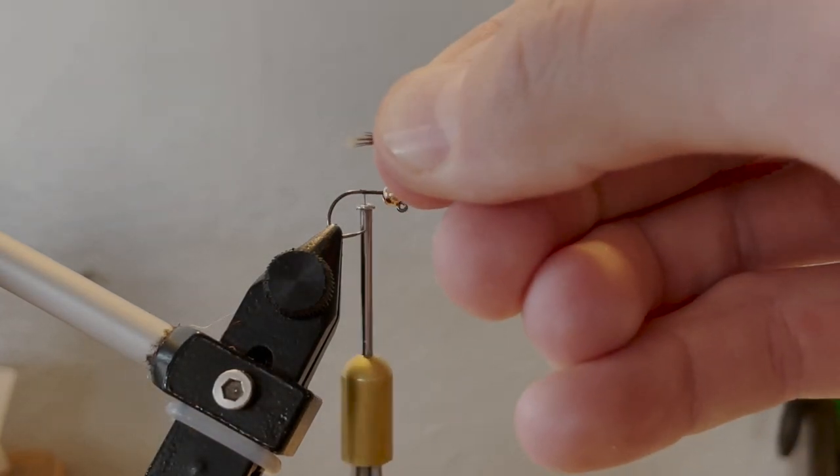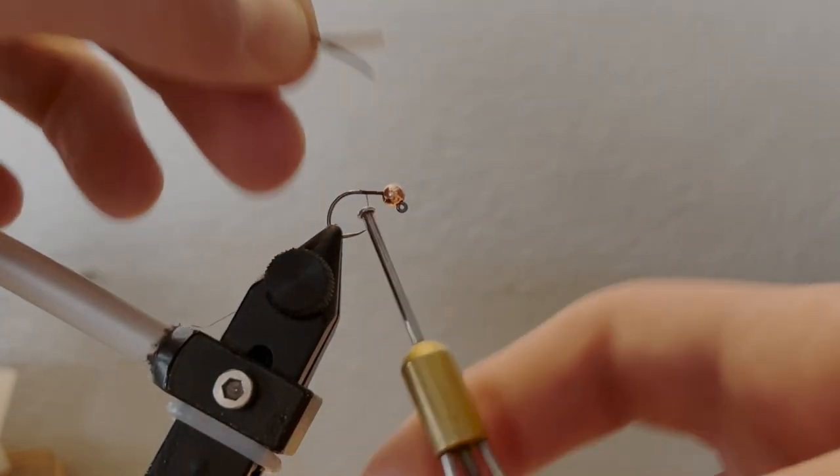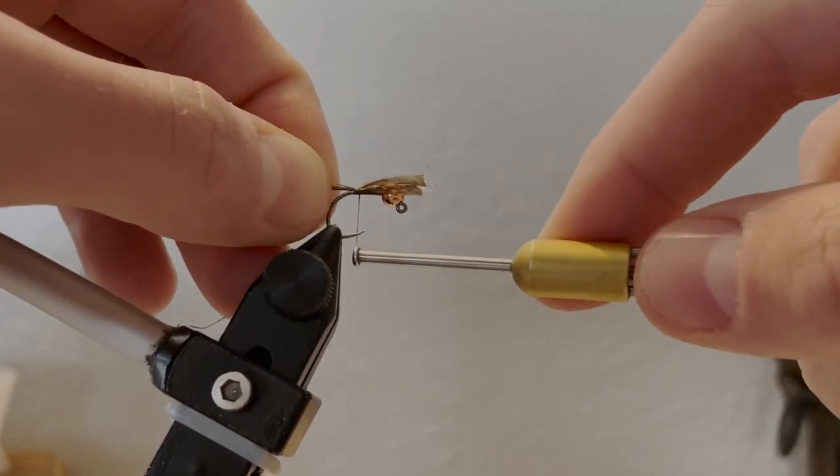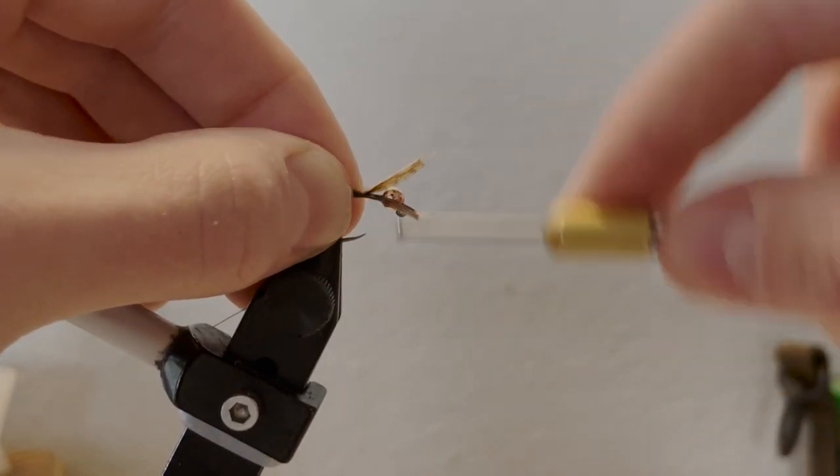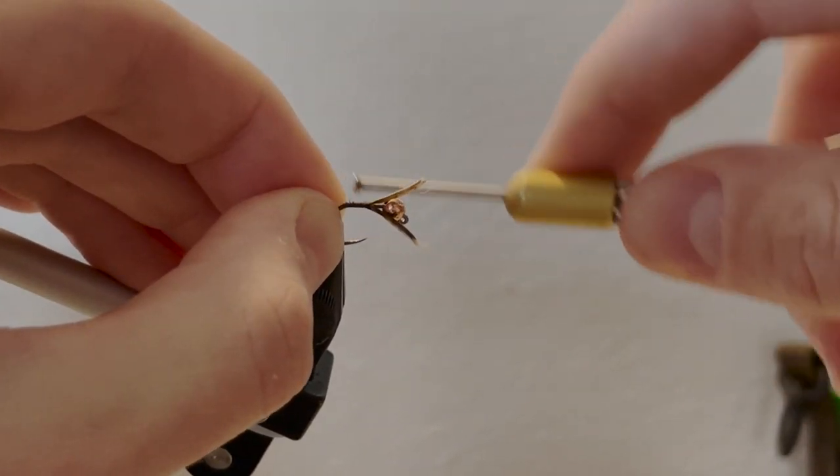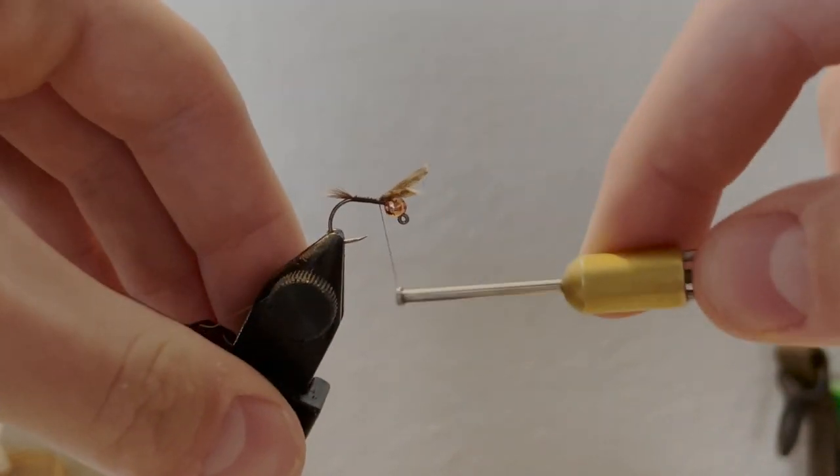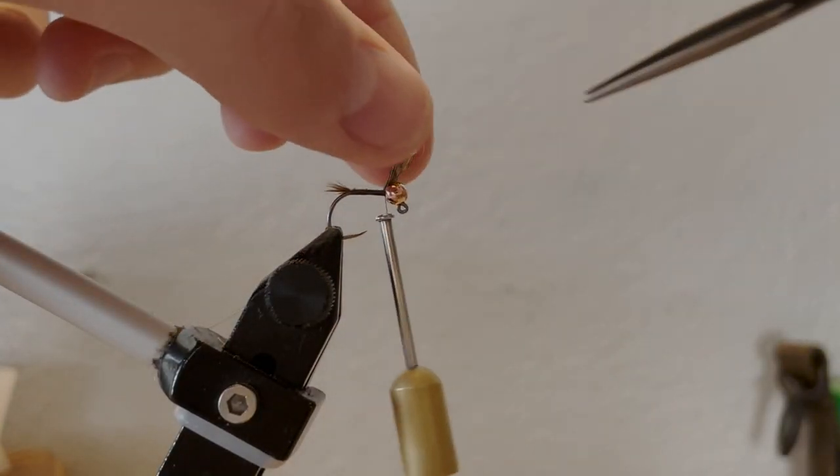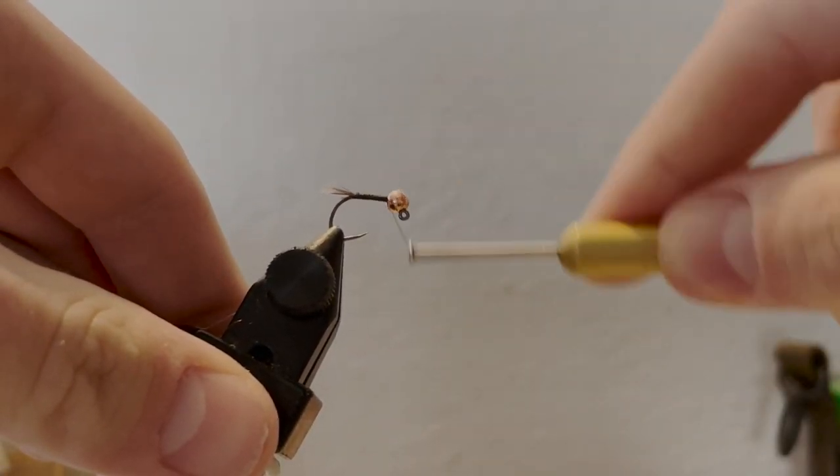Once you've selected eight to ten fibers from the partridge skin, use them to form a nice little tail. I don't like a big tail—caddis don't even have tails, so it's just an attractor. I just like to add just a small tail, and by small I mean pretty short, just sticking past the hook bend. Secure down the rest of the partridge, snip off the extra, and bring your thread back at the bead. Keep your thread up at the bead.